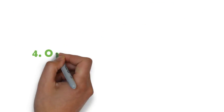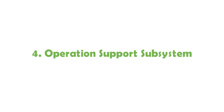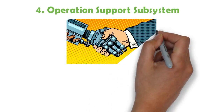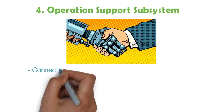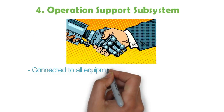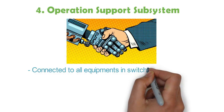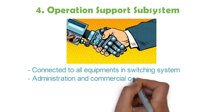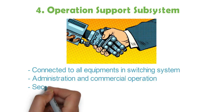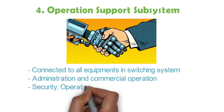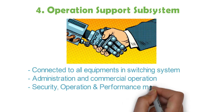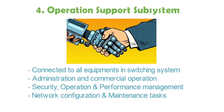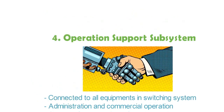The last subsystem is the Operation Support Subsystem (OSS). It is connected to all equipment in the switching system on the GSM network. It provides administration and commercial operation, manages security and operations, and performs network configuration and maintenance tasks.